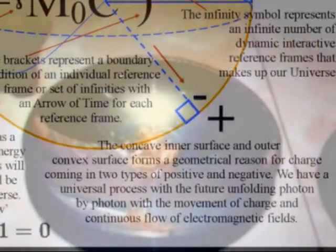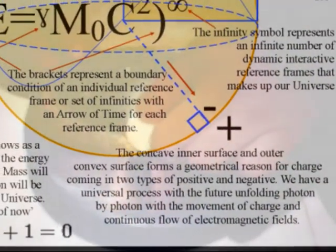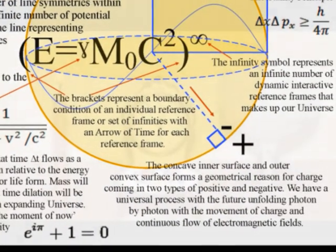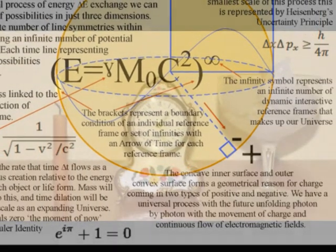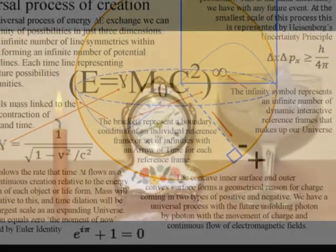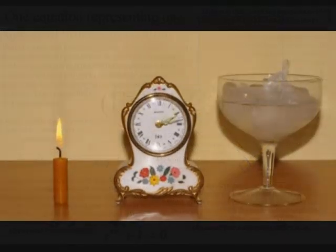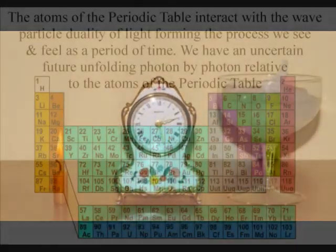I will place a link here that explains this in greater detail. I like to think of this as a three-dimensional process with one variable in the form of time. We have an emergent process with the future unfolding relative to the atoms of the periodic table.